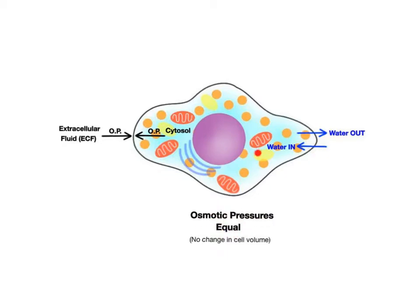There is just as much water entering a cell as there is leaving it. But cell volume and shape can change when the fluid environment surrounding a cell has a different osmotic pressure than the cell cytosol.